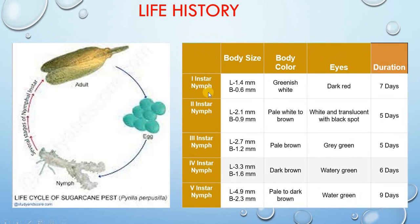The first instar nymph is greenish white in color with dark red eyes. The second instar nymph is pale white to brown, with white translucent eyes bearing a black spot. The third instar nymph is pale brown with gray-green eyes. The fourth instar nymph is dark brown and watery green.